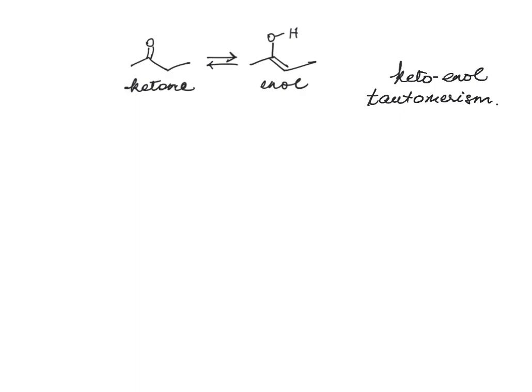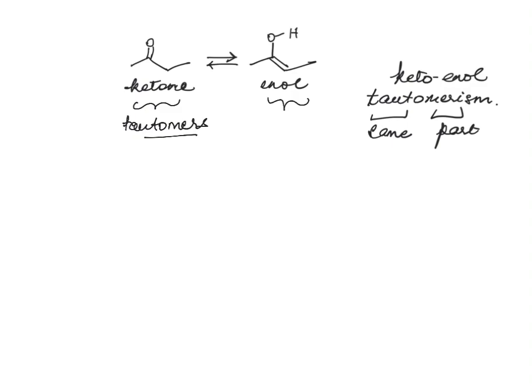What tautomerism means essentially stems from the Greek word 'tato,' which means same, and 'meros' meaning part. The individual ketone and enol forms are called tautomers. The process involves a change in the position of the hydrogen atom — this hydrogen has gone from position 1 to the third position — and we call the process tautomerism.